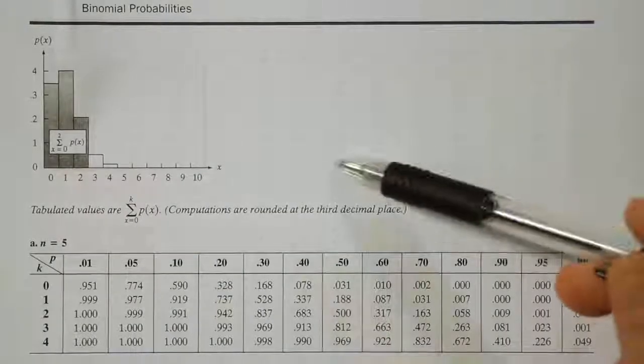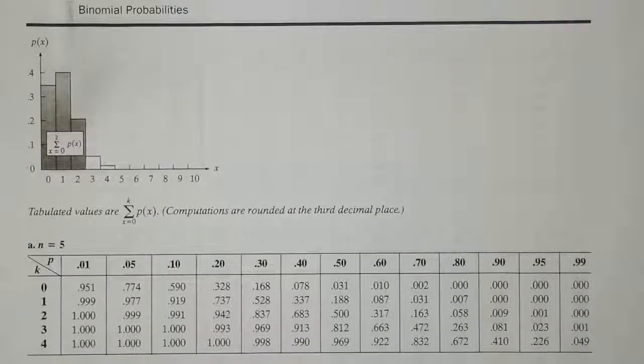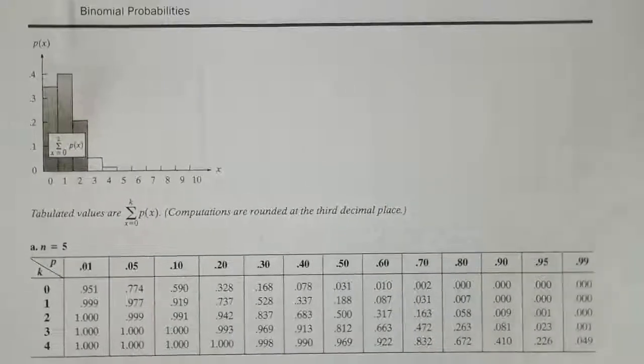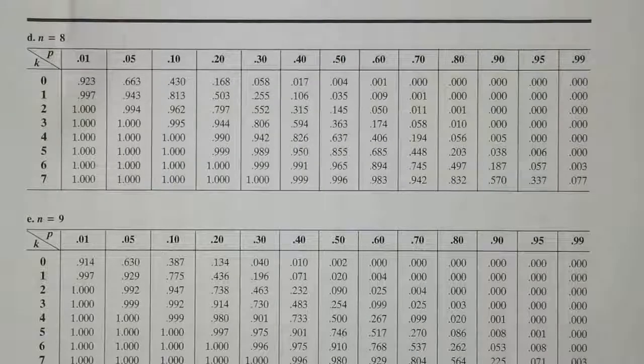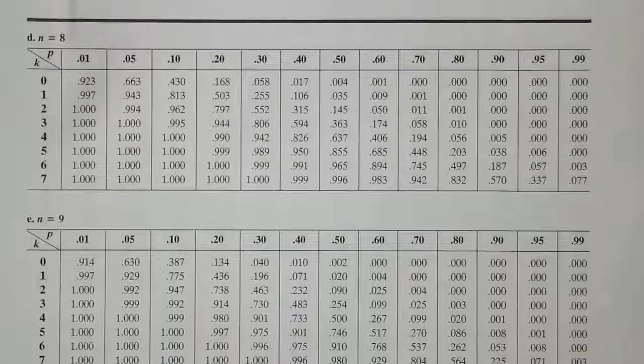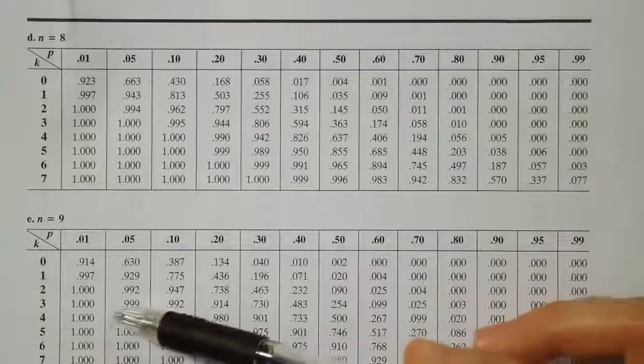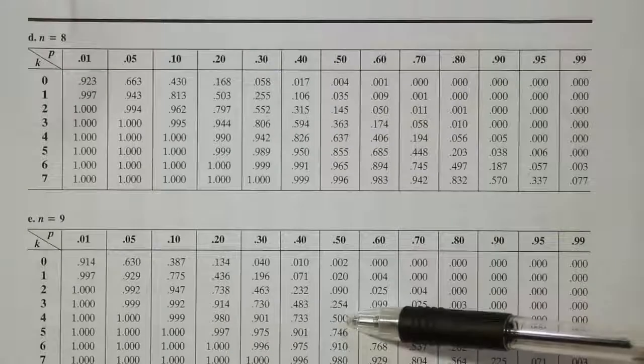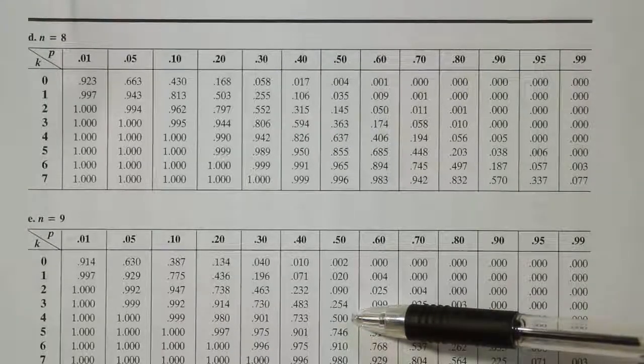We're on the binomial table, and we want to go to where it says n equals 9. So there we have n equals 9, and we're looking for the probability to be 0.5, and we want our k value to be 4. So we need this value 4 in the 0.5 row, and we get the answer 0.500.